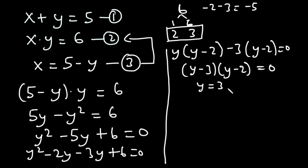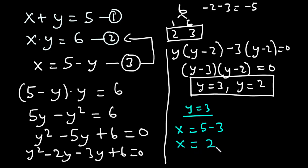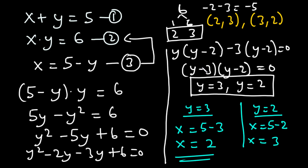So y is equal to three and y is equal to two. To find the values of x, we substitute the values of y into equation three. When y is equal to three, x is equal to five minus three, which is two. When y is equal to two, x is equal to five minus two, which is three. So when x equals two, y equals three, and when x equals three, y equals two. Let's solve another example.